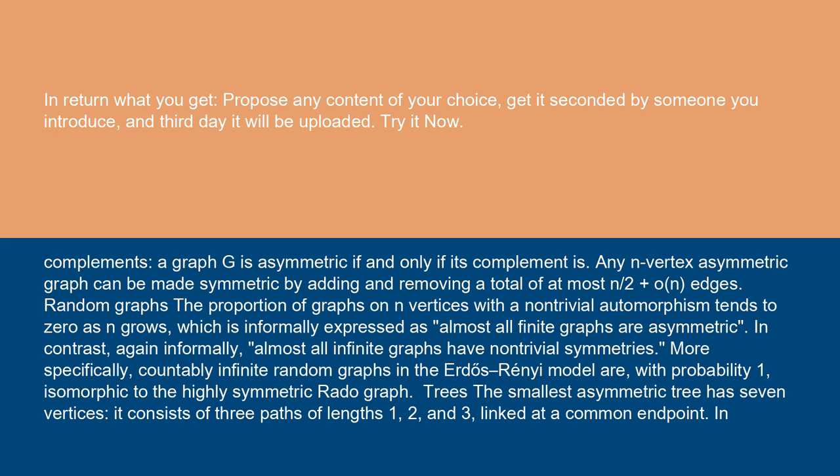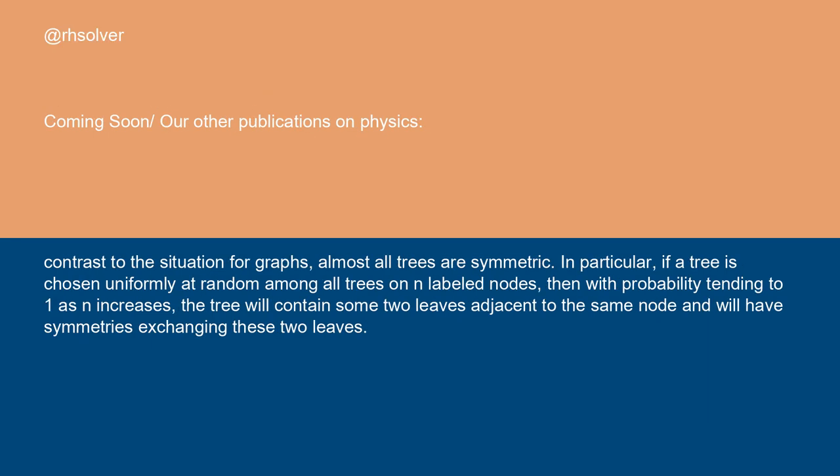Trees: the smallest asymmetric tree has seven vertices. It consists of three paths of lengths 1, 2, and 3 linked at a common endpoint. In contrast to the situation for graphs, almost all trees are symmetric. In particular, if a tree is chosen uniformly at random among all trees on n labeled nodes, then with probability tending to 1 as n increases, the tree will contain some two leaves adjacent to the same node and will have symmetries exchanging these two leaves.